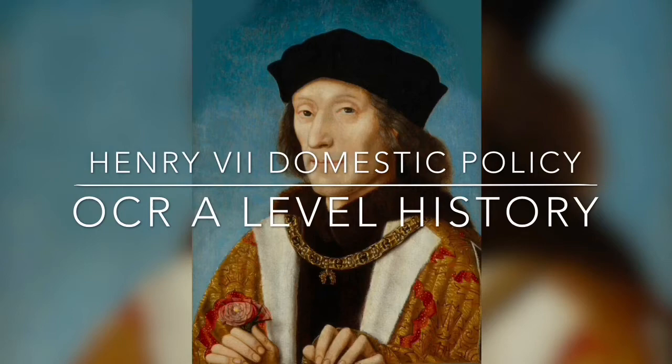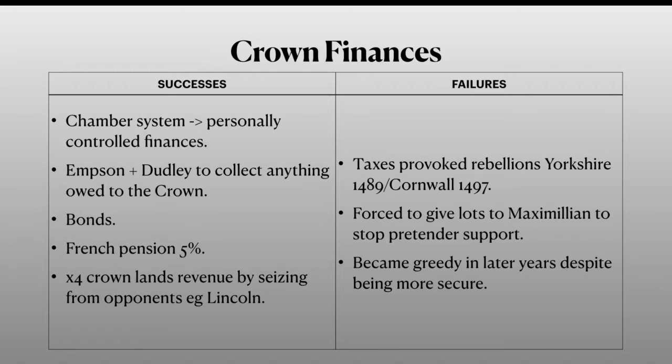Firstly, with crown finances, Henry used a chamber system which meant that he personally controlled all the finances and didn't leave anything up to any nobles or advisors — he dealt with everything. He employed two men called Empson and Dudley to travel around England and collect anything owed to the crown, such as debts and bonds.